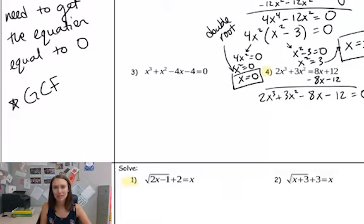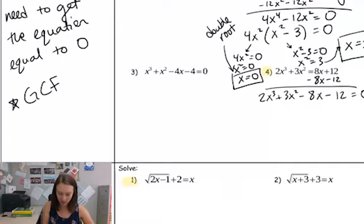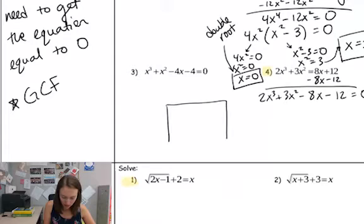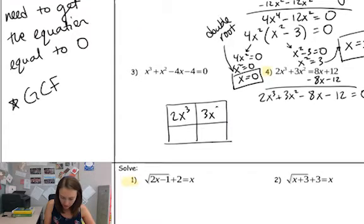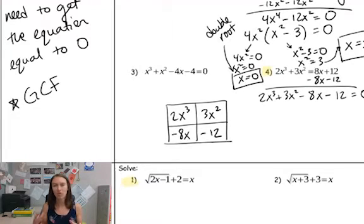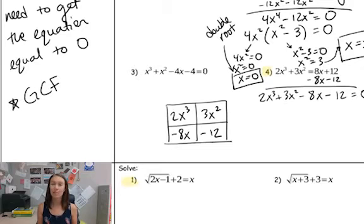There are a ton of different ways you can do factor by grouping, but one of my favorite methods that my students tend to really like is using a box. It's kind of like a little puzzle, and you put all four pieces into the box: 2x³, 3x², negative 8x — don't forget those negatives — and negative 12. So we have all the pieces in the box.